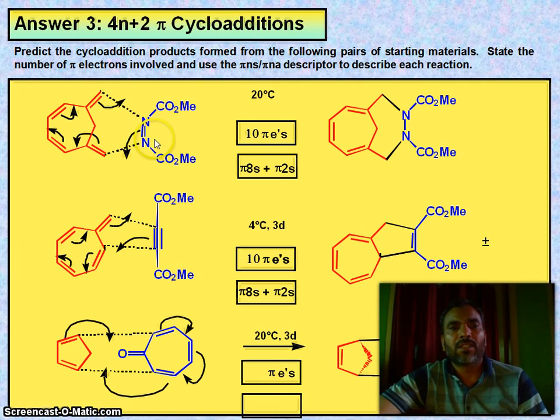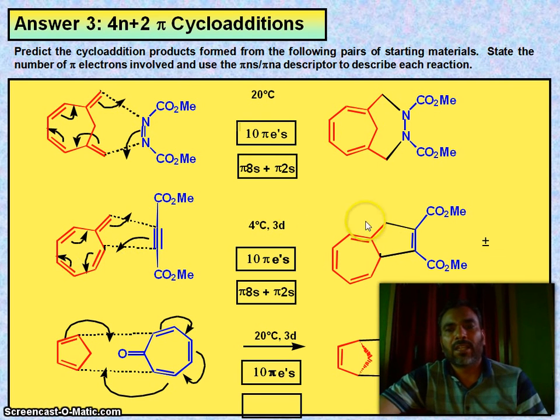Look at here. This is 10 pi electrons: 8 pi's and 2 pi's. 8 pi's here and 2 pi's here, total 10 pi's. Here 10, here 4. Here 1, 2, 3, 6 and 4. So they combine like that, they combine like this.